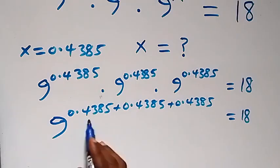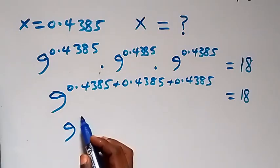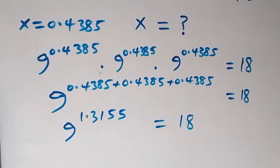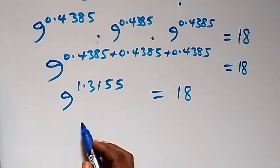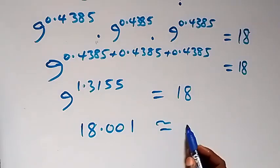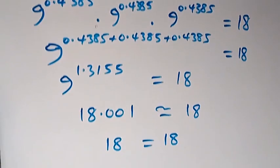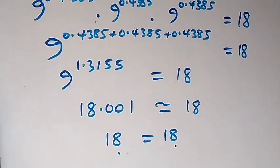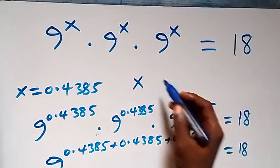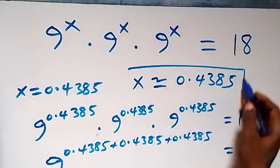And 3 times 0.4385 gives us 9 raised to power 1.3155, and this is approximately equal to 18. So we can confirm and conclude that the left hand side equals to the right hand side, which is 18. Hence we can conclude that x approximately equals to 0.4385, and here we have come to the end of this problem.